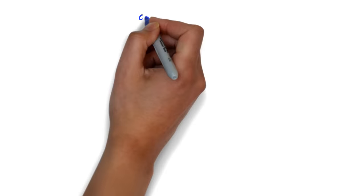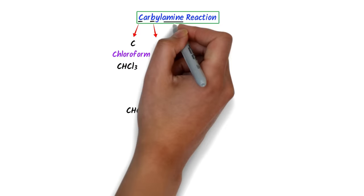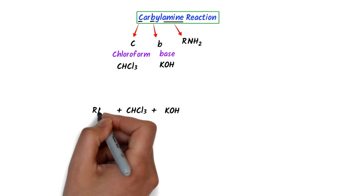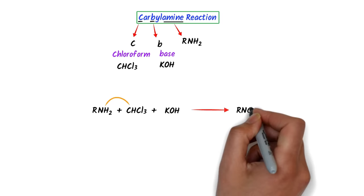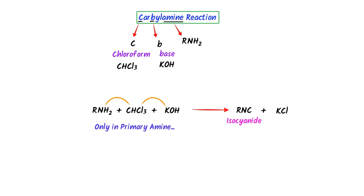Now let me teach you the carbylamine reaction. In 'carbylamine,' I select C and B: C stands for chloroform (CHCl3) and B stands for base like sodium hydroxide. I also select amine — formula R-NH2. These are the reactants. This will displace H2 and give R-NC, called isocyanide. K attacks chlorine to form potassium chloride. Remember, this reaction is only possible with primary (1°) amine like CH3CH2NH2, not secondary or tertiary amine.